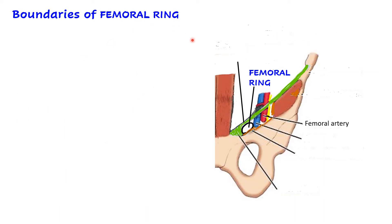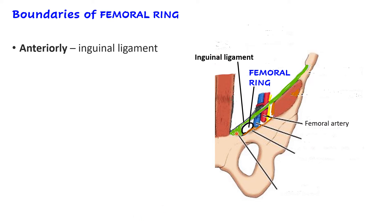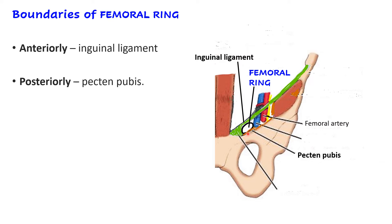The femoral ring is almost blocked by a femoral septum, which is formed by extraperitoneal loose areolar tissue. The boundaries of the femoral ring are: anteriorly, the inguinal ligament extending from pubic tubercle to anterior superior iliac spine; posteriorly, the pecten pubis — some books also mention pectineus muscle and fascia, or the pectineal ligament, all attached to the same bony area.